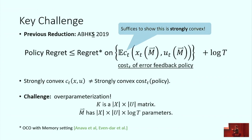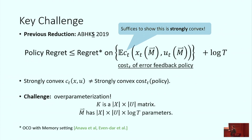That work also provides a clean reduction: to bound policy regret, it suffices to bound regret on a specific cost sequence with only a log additional factor. This cost sequence is what you would have suffered at time step t had you run controller M from the very start. In stateless online learning, if you have strongly convex costs, that is sufficient to get logarithmic regret. So you would hope that if C_t is convex in X and U, that should be good enough. But there's a catch: strongly convex in controls and state doesn't mean strongly convex in the controller space.